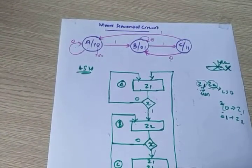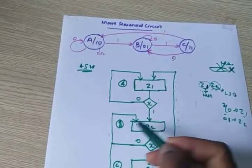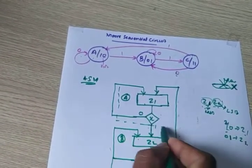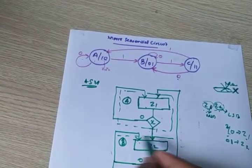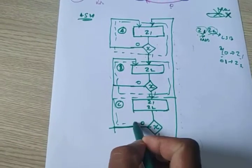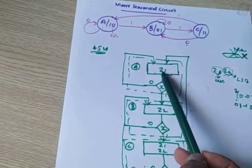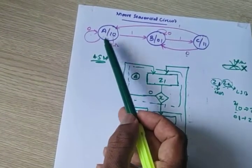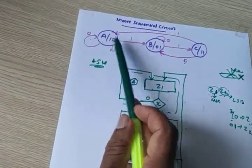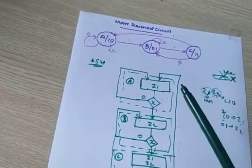This is the complete conversion of the Moore sequential circuit into an ASM chart. I will represent each section as a block — this block is completely related to state A, this is completely related to state B, and this much is completely related to state C. For each state, we have a state box and a decision box. The decision box checks what happens if 0 comes and 1 comes — what is the state change. This is the ASM chart.